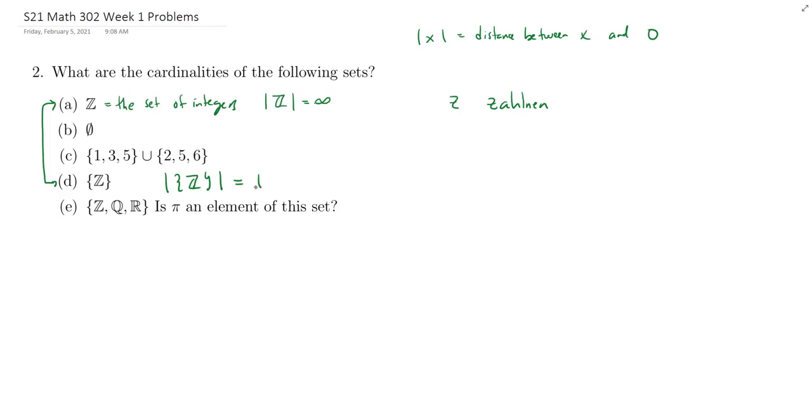And so that's why the cardinality here is 1, not equal to infinity. So put another way, let's say I have the number 2. 2 is an element of the set of integers. But 2 is not an element of the set whose element is the set of integers.